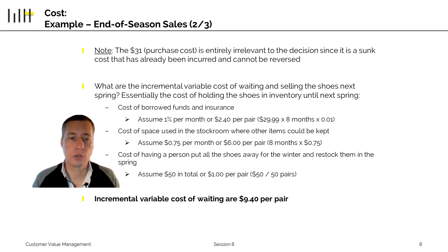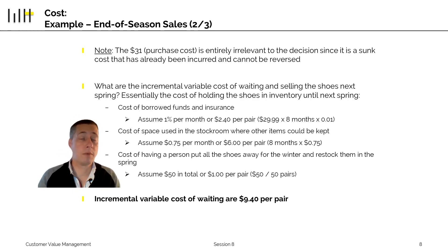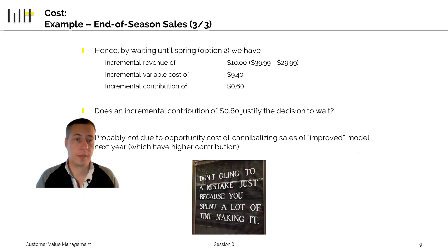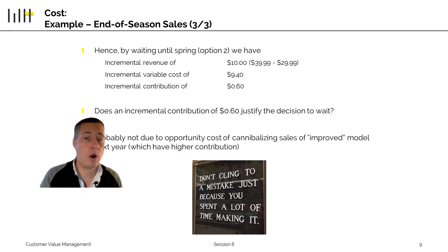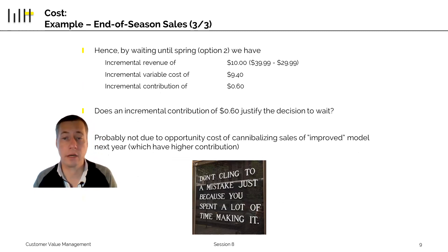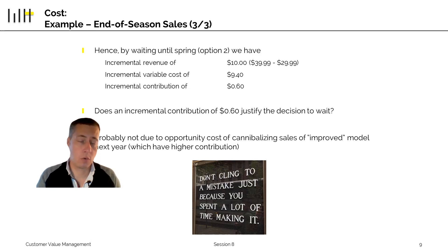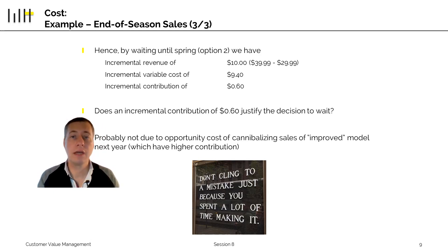Instead, consider the incremental cost and incremental profit of storage versus selling now. For example, insurance at 1% per month — about $2.40 per pair — plus storage rental and labor to store the shoes adds up to roughly $9.40. If you wait, you earn $10 more per pair ($39.99 versus $29.99), but you also incur $9.40 in incremental costs, meaning the actual difference is only $0.60. A difference of $0.60 per shoe would likely not justify waiting. This is why considering sunk costs correctly matters — the right calculation of incremental cost and revenue shows that putting the shoes on sale is the best decision, even if you technically sell them below what you paid.